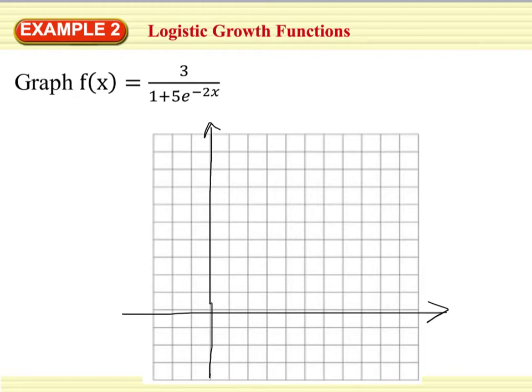So for example 2, we're going to graph the logistic growth function, 3 divided by 1 plus 5e to the negative 2x. So before we even get started, we know that we have horizontal asymptotes at y equals 0, and y equals our c value, which in this case is 3. So if I go in and draw my horizontal asymptotes, I have y equals 3 right here, and y equals 0 is just our x-axis there.